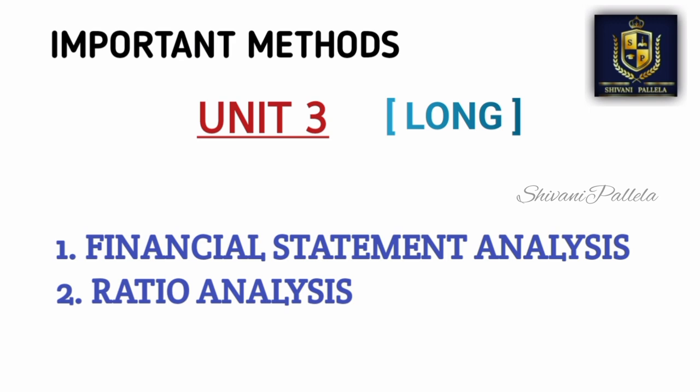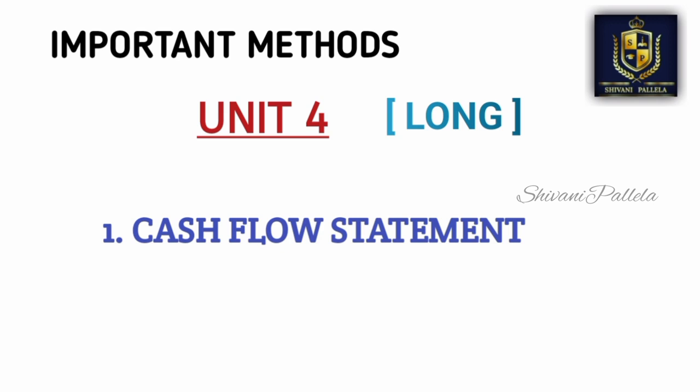In Unit 2 you have only 2 problematic methods: depreciation and final accounts. Final accounts include trading account, profit and loss account, and balance sheet. In depreciation you have 2 types: straight line method and diminishing or reducing balance method. The diminishing method is typically asked for long. Be perfect with these 2 types of problematics from Unit 2 to secure 8 marks.